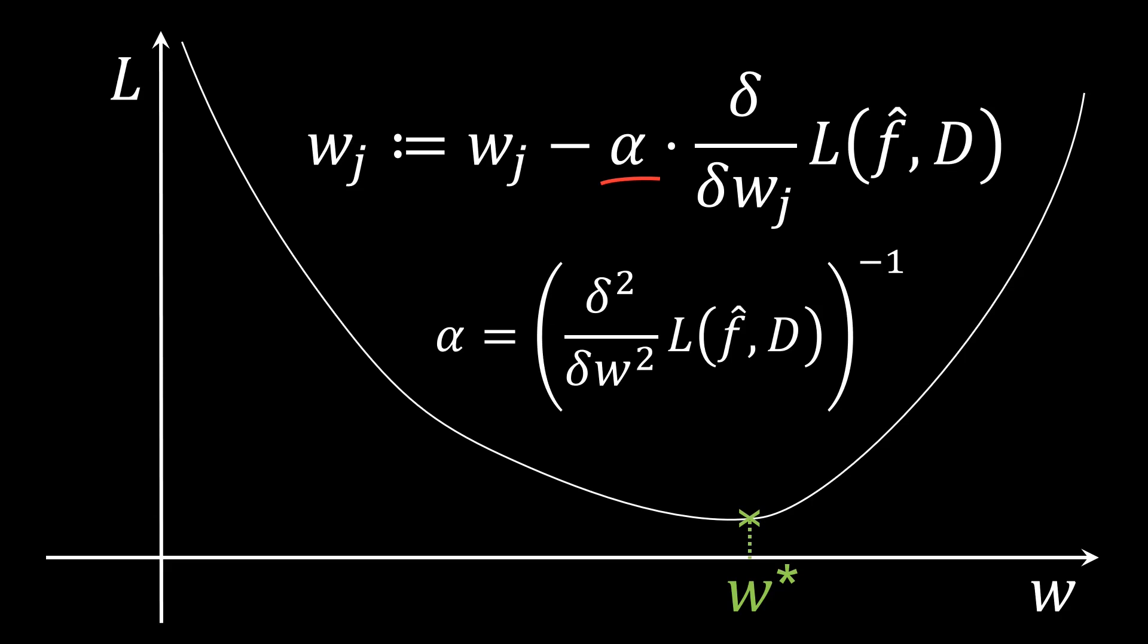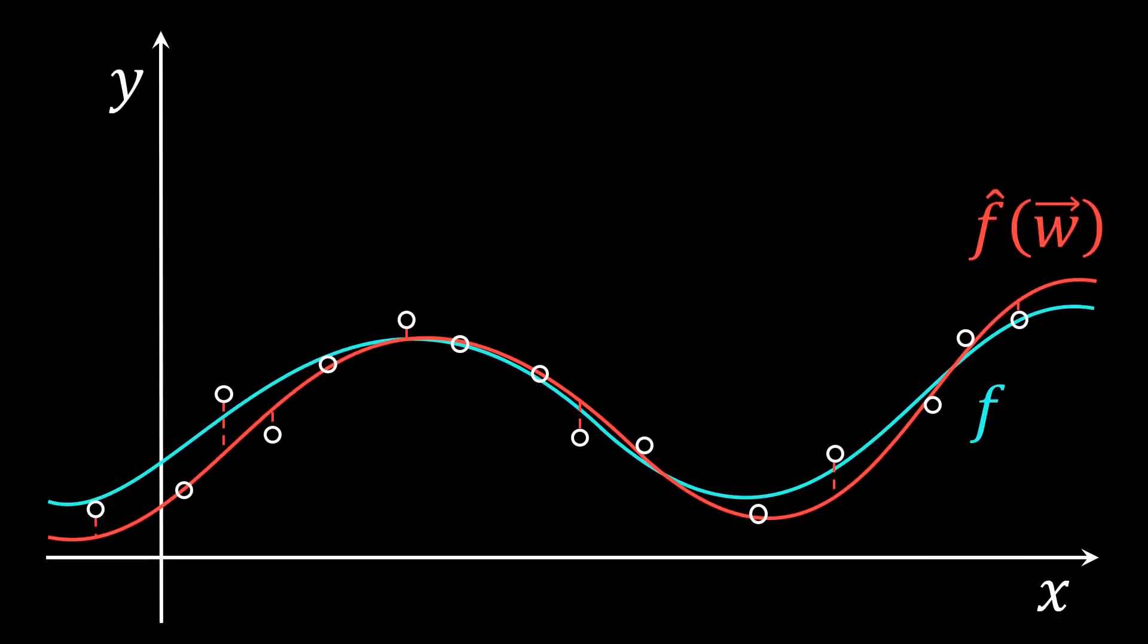Let us go back to the plot with which we started that visualizes the data. Updating our parameters with respect to the gradient of the loss involves the calculation of the loss over the whole dataset. This can become very costly if the dataset is large, as this calculation has to be done for every update.